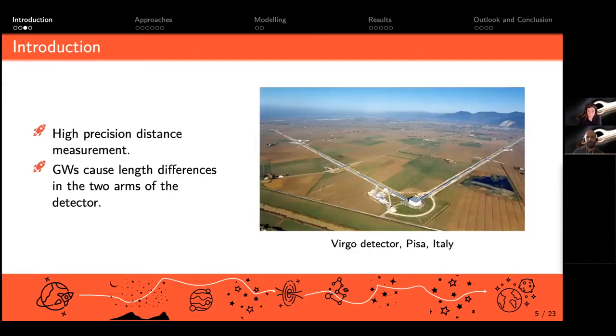On the right hand side we see a Virgo detector in Pisa, Italy. It has these long arms, and gravitational waves coming from space will shorten or lengthen these arms with respect to each other. There's a laser shooting through these arms measuring the distance, and these differences in length can be measured.